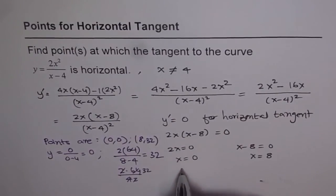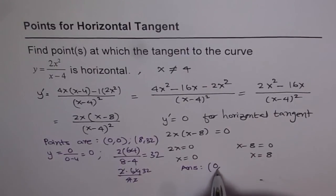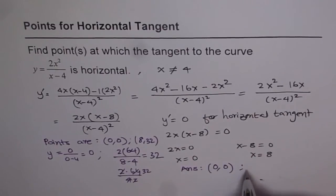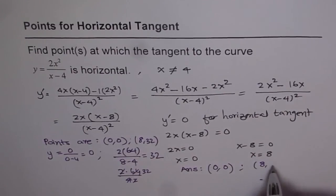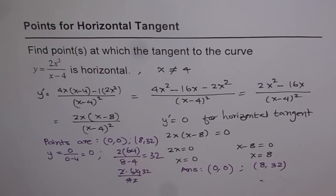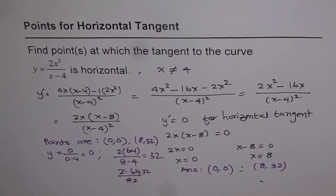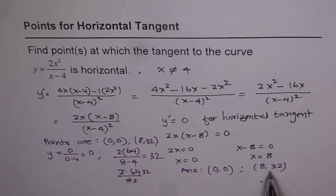And so now we can write down our answer. The points are 0, 0 and 8, 32. So that is how you have to provide the answer. You have to provide both coordinates, x and y. That is kind of very important. Otherwise, you are not writing the complete answer. I hope you understand. Thank you.